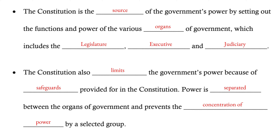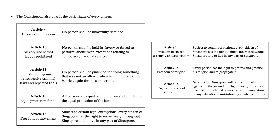The constitution also includes provisions to limit the government's power through what we call safeguards. These safeguards ensure that power is separated — meaning not one person or one group holds all the power in the nation. Different organs carry a certain degree of power so that it is not consolidated in one place or one entity alone. The constitution also guarantees the rights of citizens, meaning the government is obligated to follow and protect the rights of any citizen of this nation.